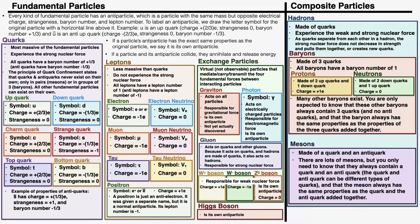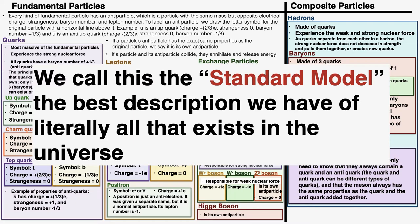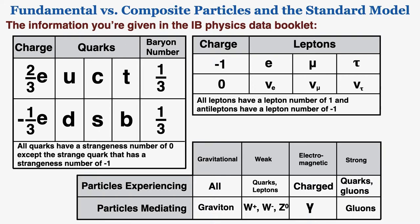We call all of this together the standard model, which is the best description we have of everything that exists in the universe. This is the information you'll be given about quarks, leptons, and exchange particles in your IB physics data booklet. One thing to note: the charge for some leptons should read −1e rather than just −1, so watch out for that — it's how it was printed in the data booklet.